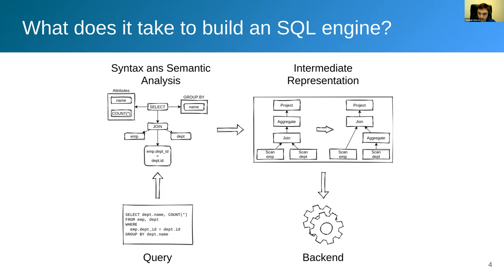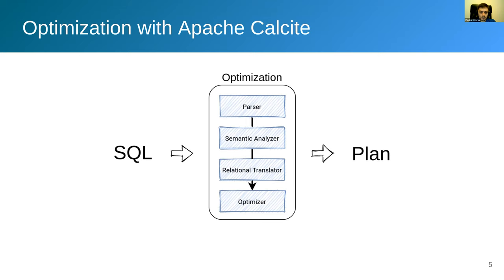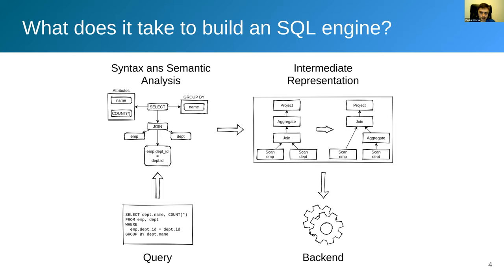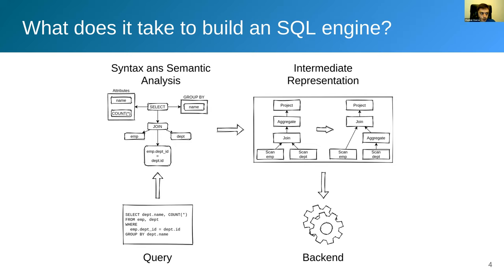Once you have the intermediate representation, you apply many different transformations to find a better execution plan. Filter push-down is one very common optimization — ensuring the data stream is filtered as early as possible to improve performance. But this is only one of many dozens or even hundreds of optimizations you may apply. After that you submit the execution plan to your backend. In the database community there is consensus that implementing all these things, especially the transformations on top of the intermediate representation, is one of the most painful and difficult parts. Now imagine there is a system that can do all this for you — that system is Apache Calcite.